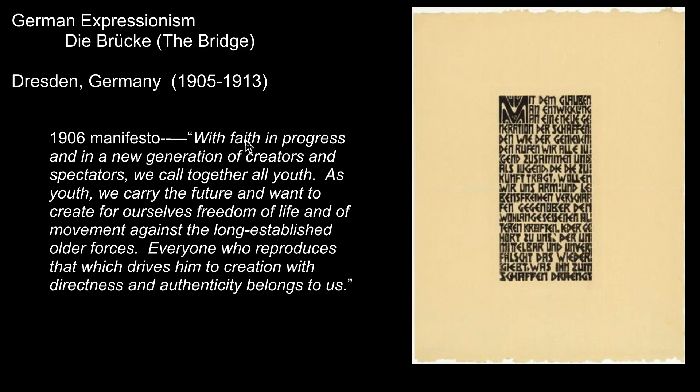Die Brücke, meaning 'the bridge,' was formed in Dresden in 1905 by four students in their early twenties. They had no art training and were self-taught, which they believed helped them express more pure emotion. They published a manifesto and said they wanted to stand up to older forces, but then ended up selling their art through galleries — not academic exhibitions — to the very people they were critiquing. They loved Munch, Van Gogh, and Seurat, seeing their works at an exhibition in Dresden in 1906. They embraced Munch's heightened expression and rejection of naturalism, using that visual vocabulary to point out the ills of society so they could build a bridge to a better future.